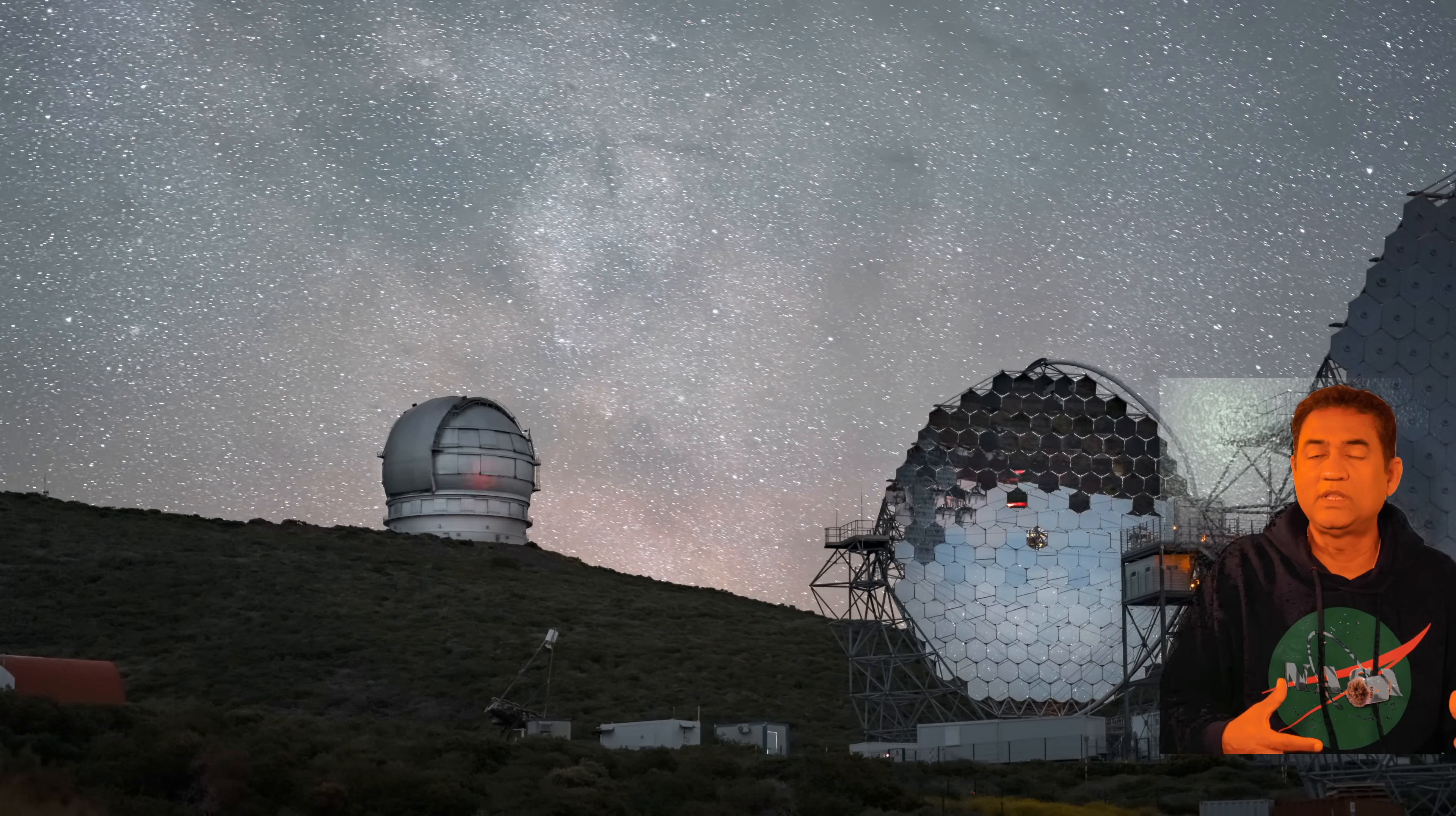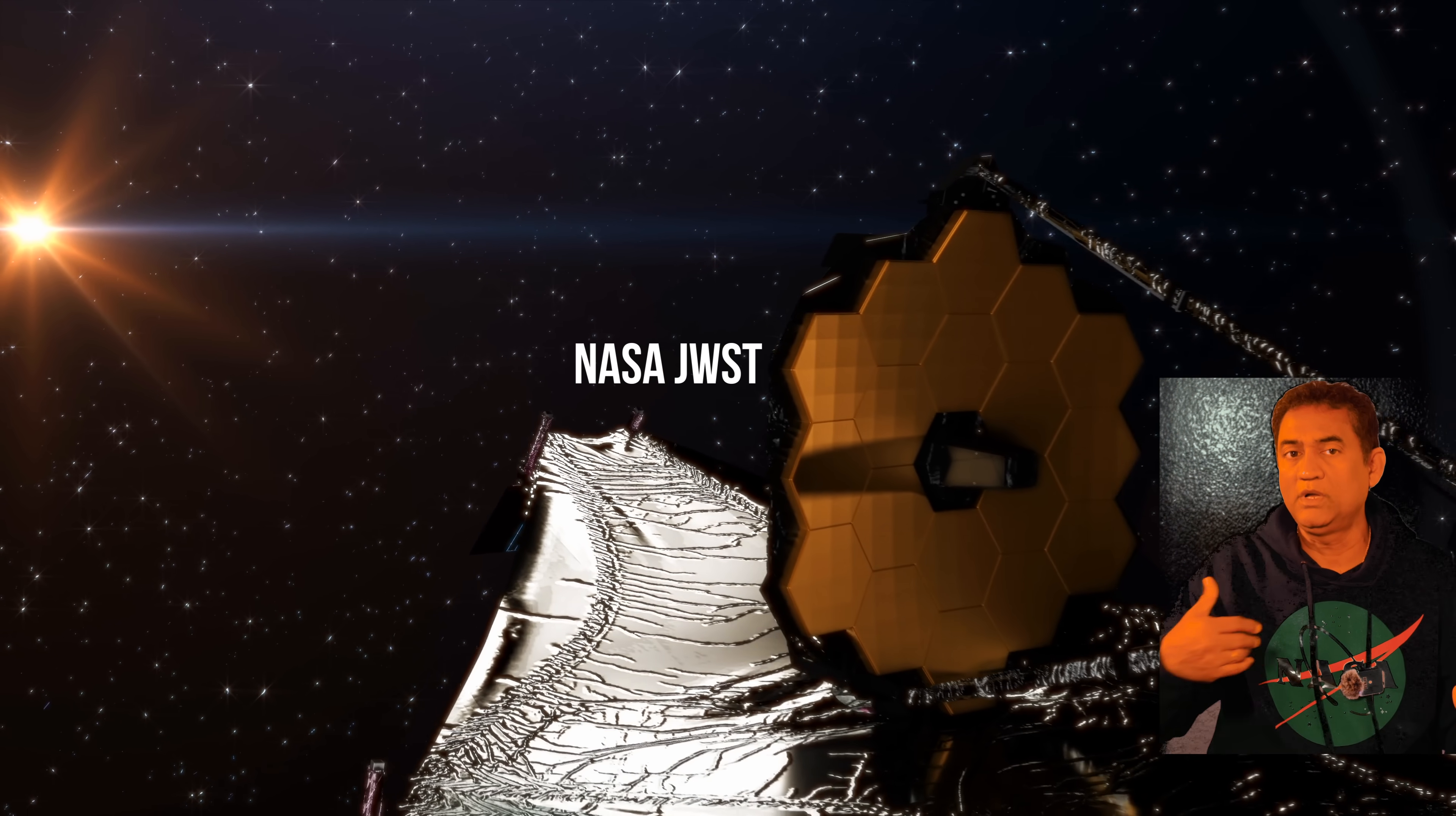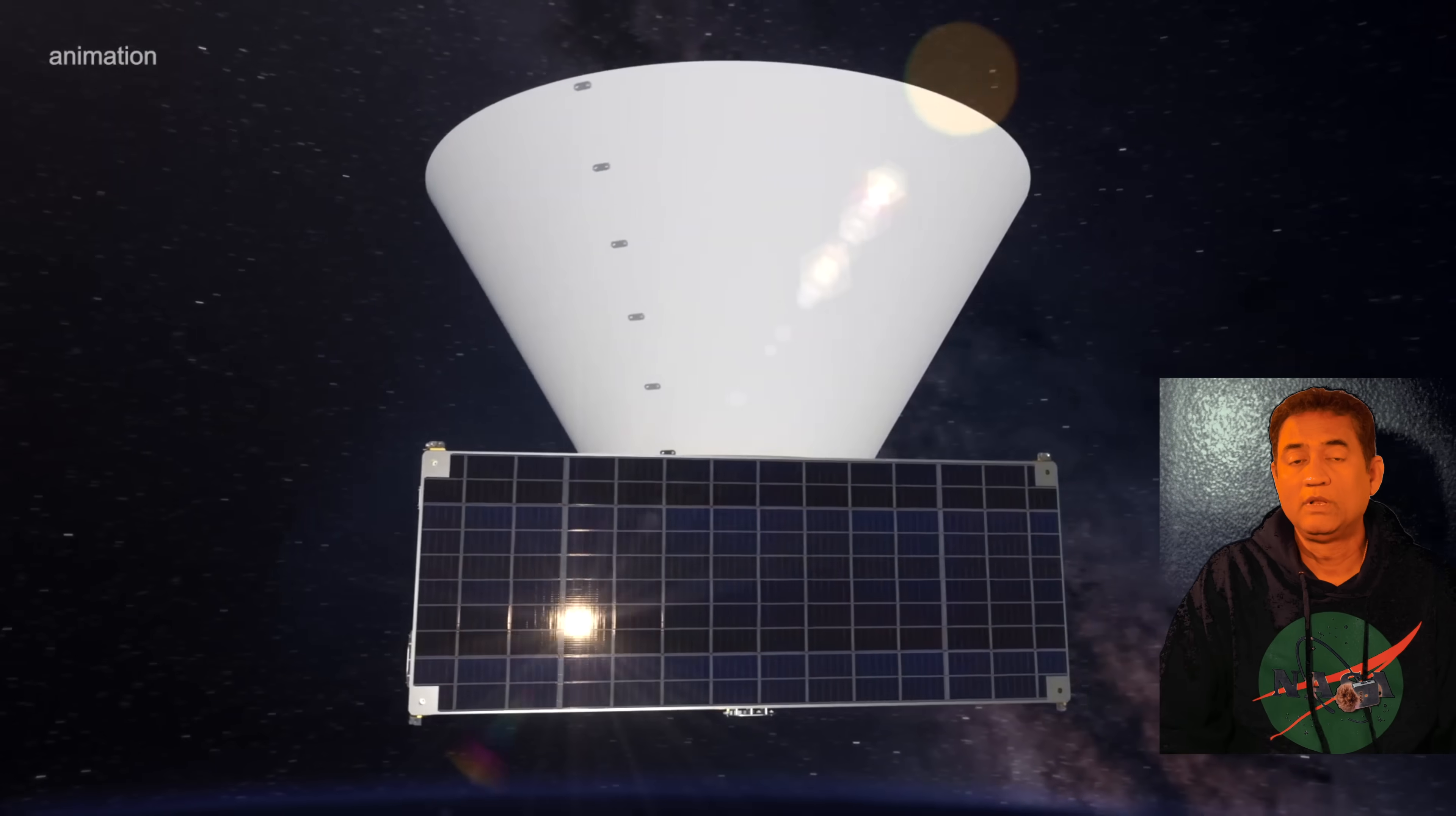You might be wondering, how do we even measure this comet that faint and this far away? We are using the biggest tools that we have right now. The Gran Telescopio Canarias measured the visible coma, 25,000 kilometers. The James Webb Telescope, the Spitzer, detected the CO2 halo around 700,000 kilometers.